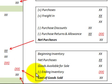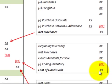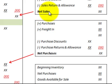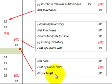Now let's look at the cost of goods sold. We have our beginning inventory and our net purchases — add those two together to get goods available for sale. Then subtract out the ending inventory from goods available for sale to get cost of goods sold. For gross profit: we take our net sales, subtract the cost of goods sold, and we get the gross profit.